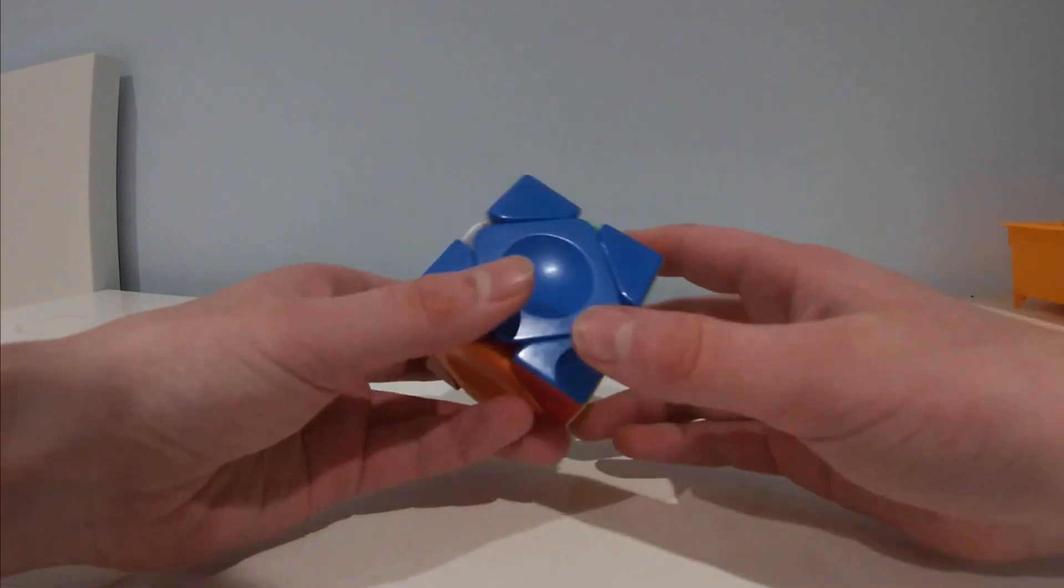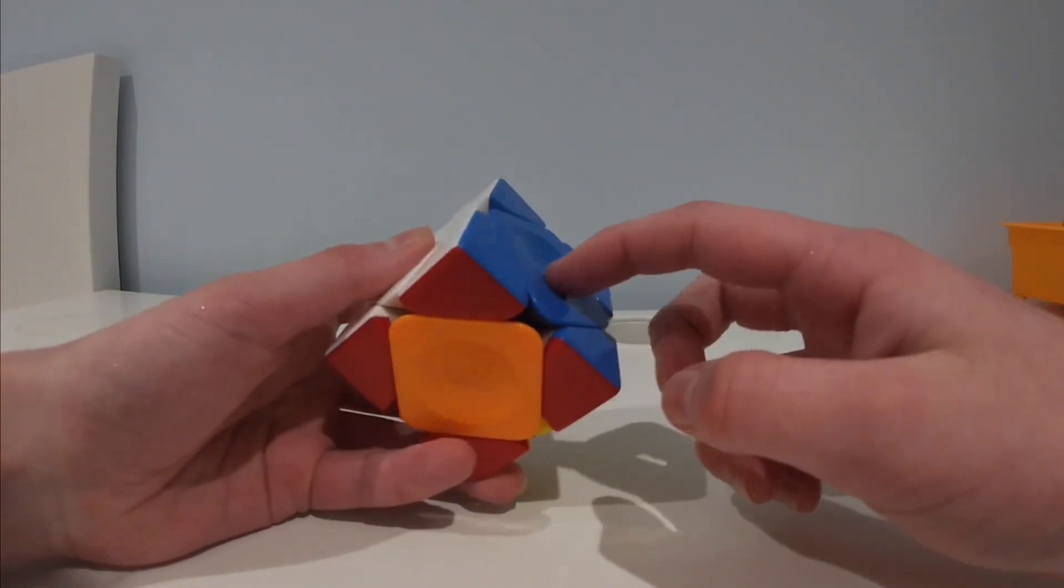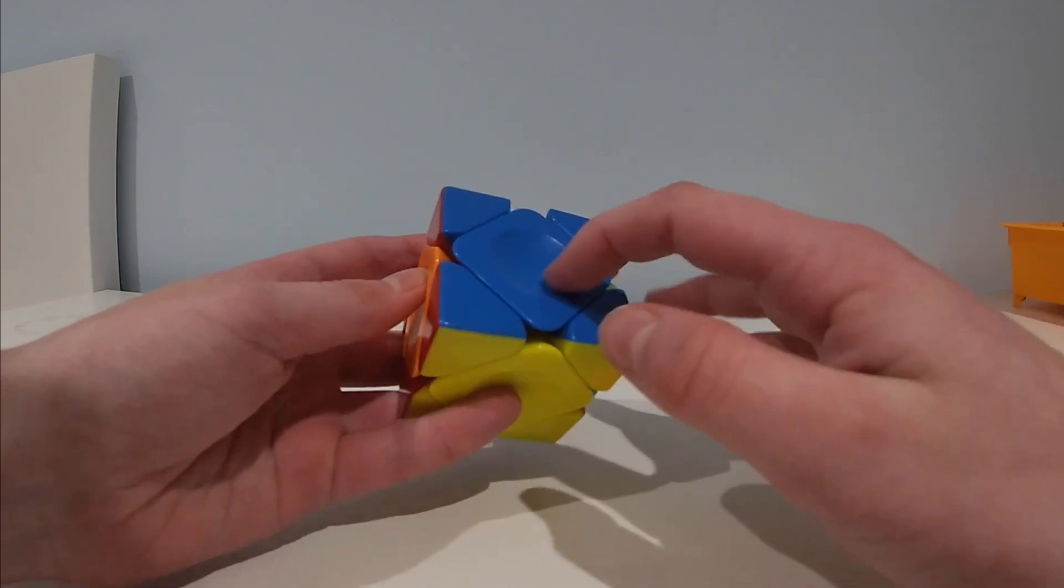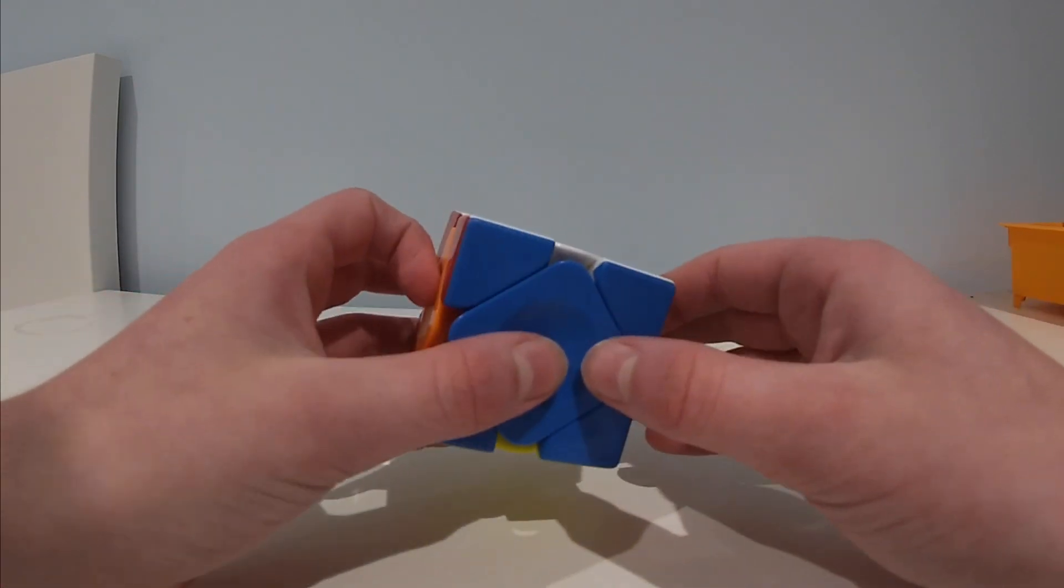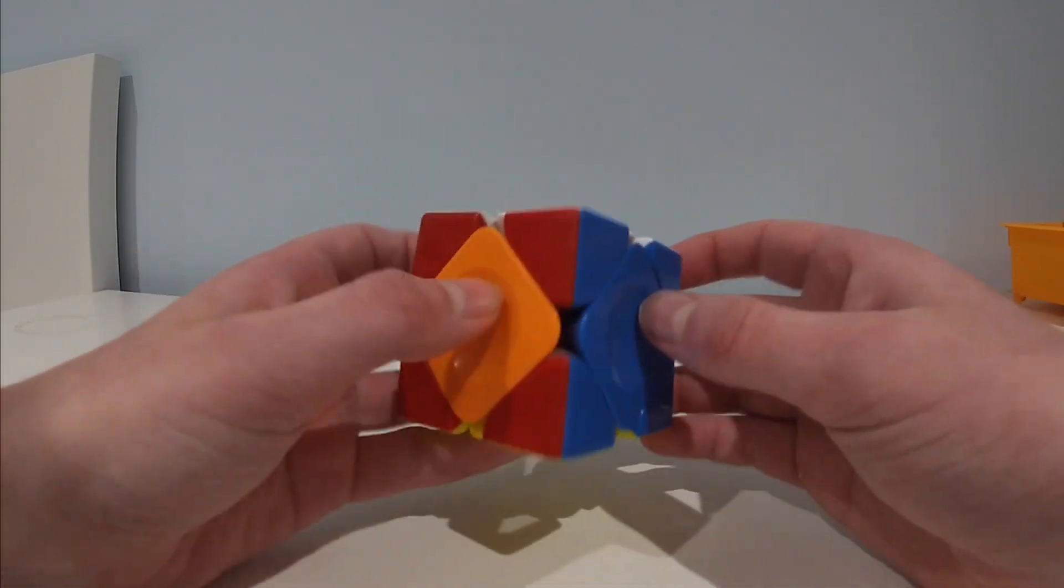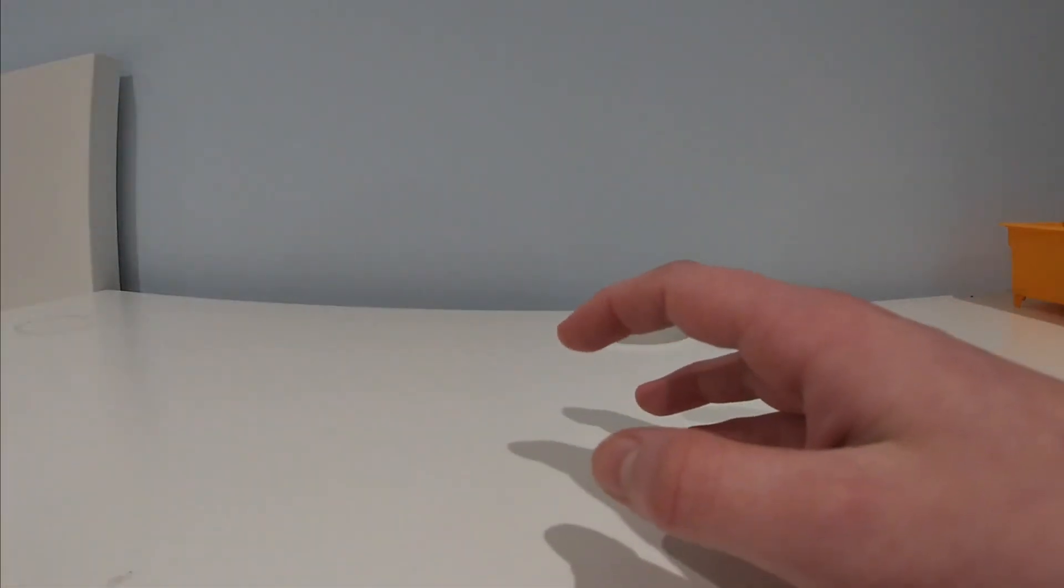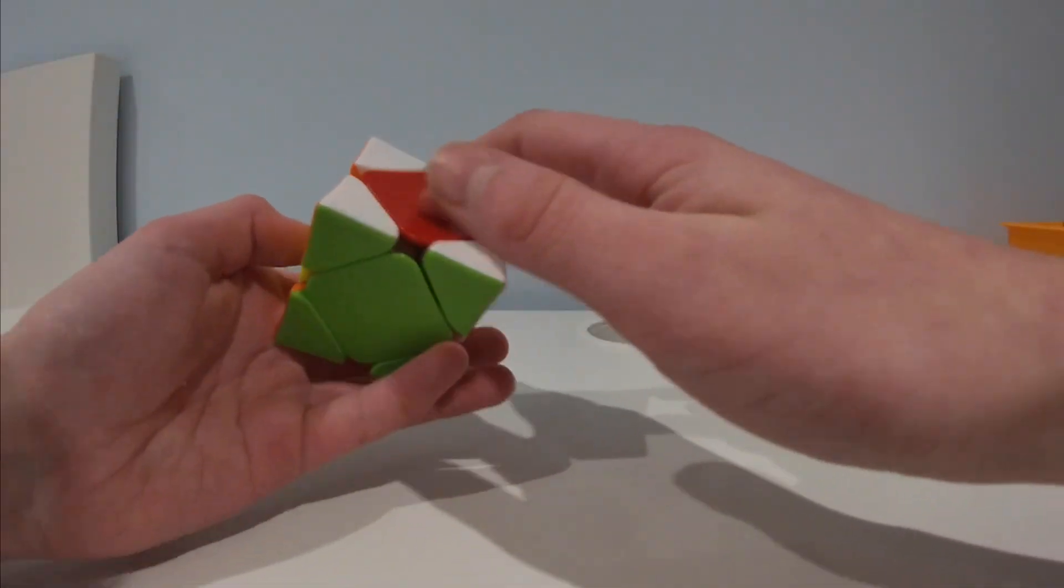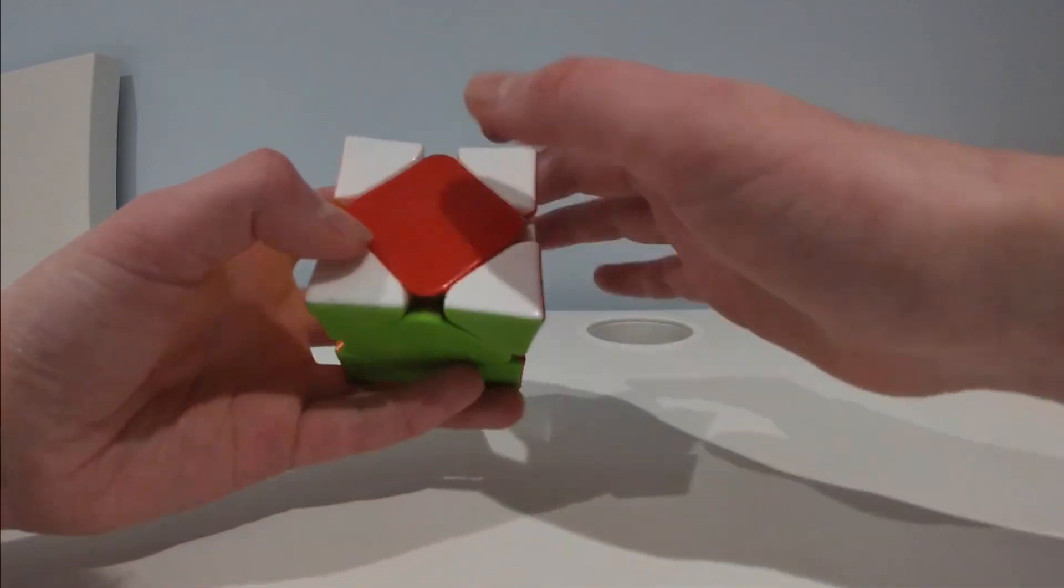The next step is solving another center. A lot of the time, you'll get lucky and this will skip. And in that case, you don't have to do anything. Like here, you've already got one solved. But sometimes you'll get a case where you don't have any centers of other centers solved apart from these two.